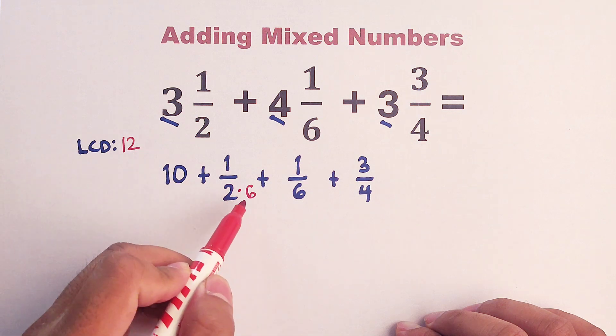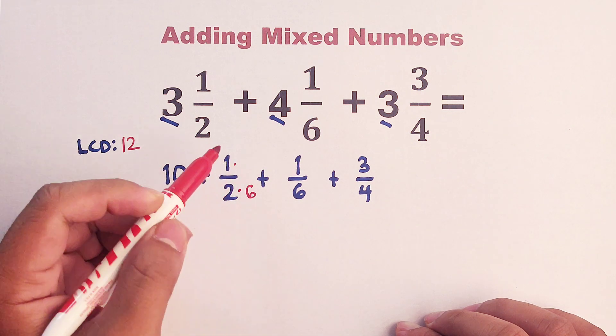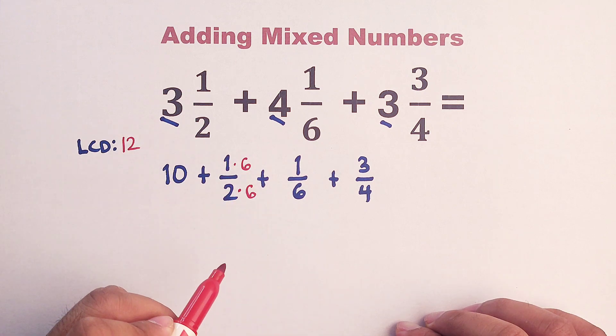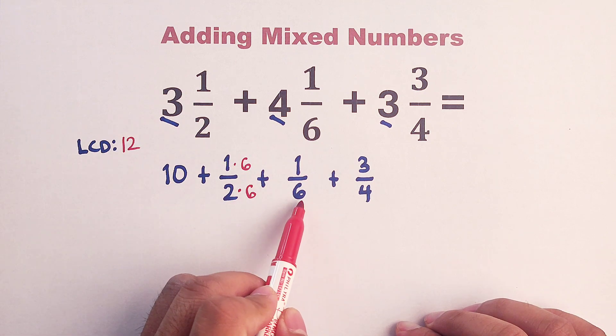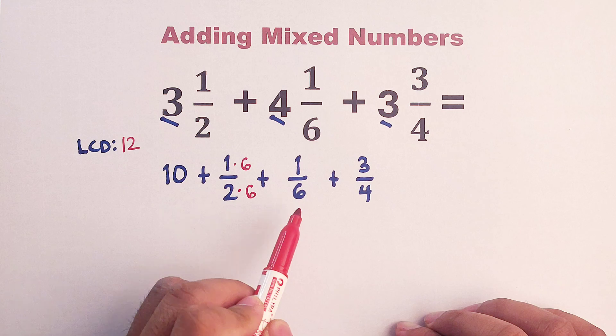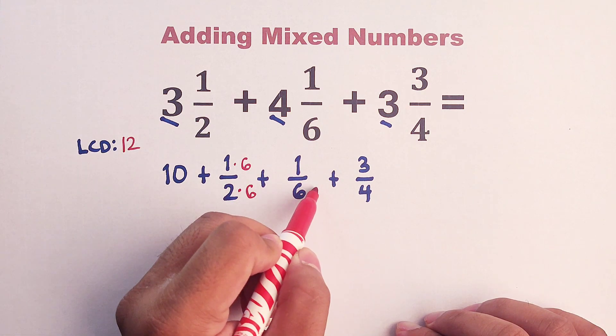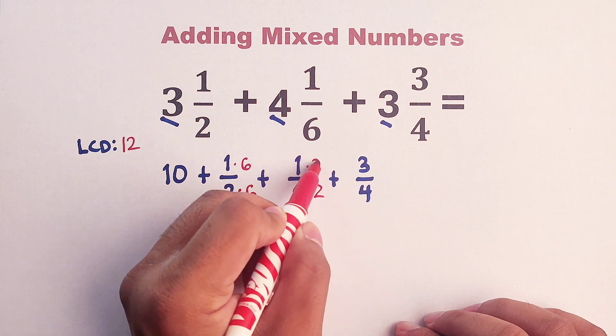So now, if we multiply this denominator by six, we also need to multiply the numerator by six. Next, the six, what should be multiplied by six to make it 12? Okay, very good. The answer is simply two. And then this is two.